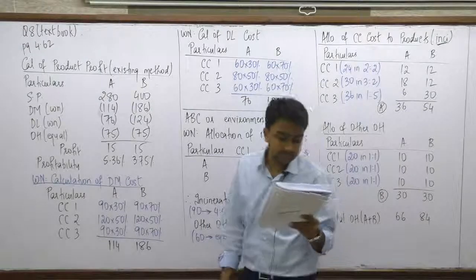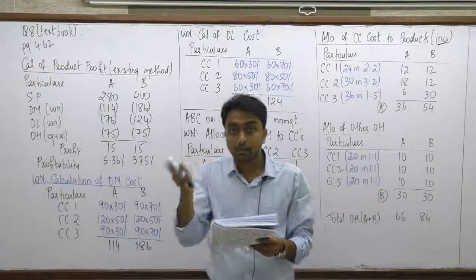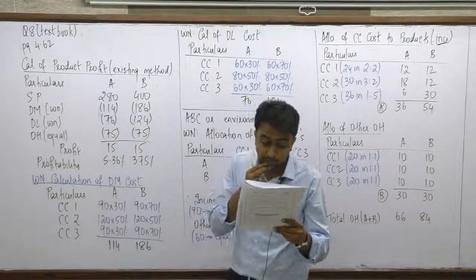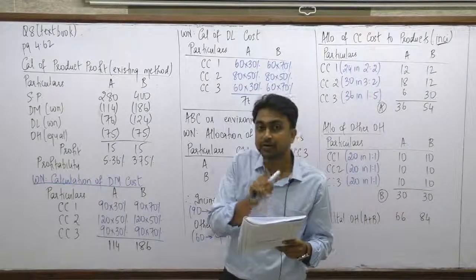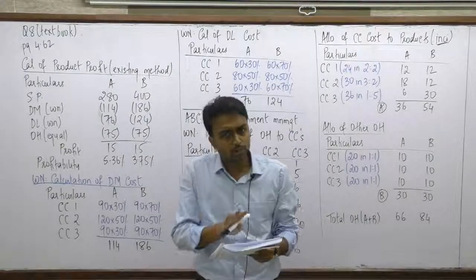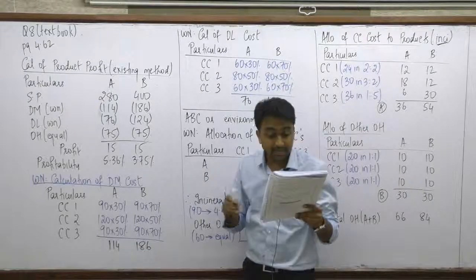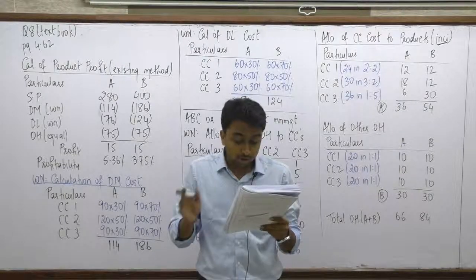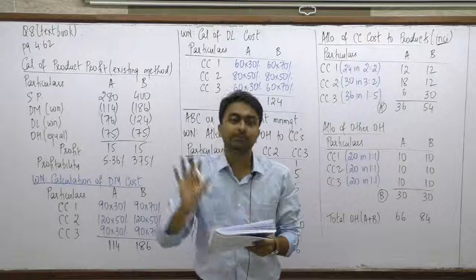All other expenses considered as overheads per kg is ₹150, over and above DM and DL. These overheads were initially allocated equally between Grade A and Grade B. Pricing decisions for the fertilizers are made on this cost allocation. Now, the management accountant has come across the concept of environmental management accounting — pricing should also factor in the environmental cost generated by each product.